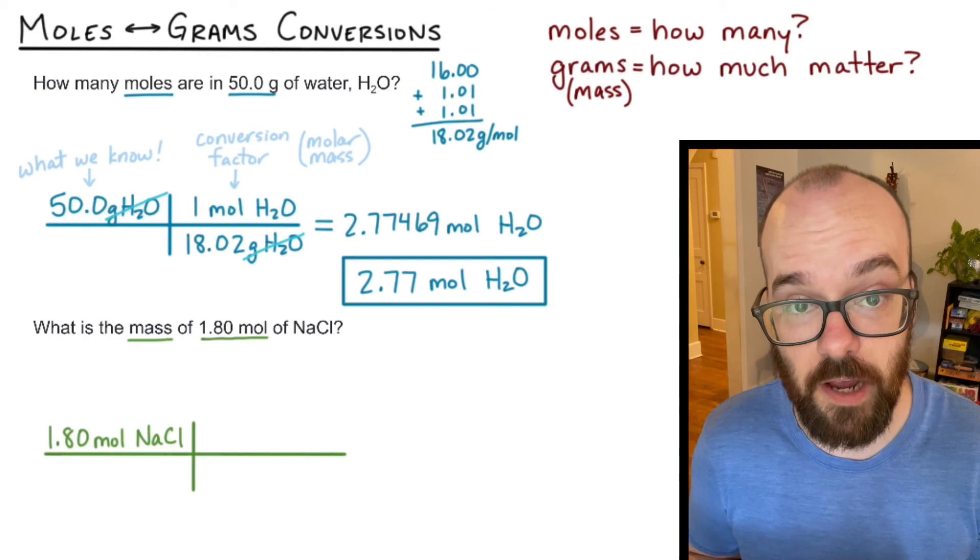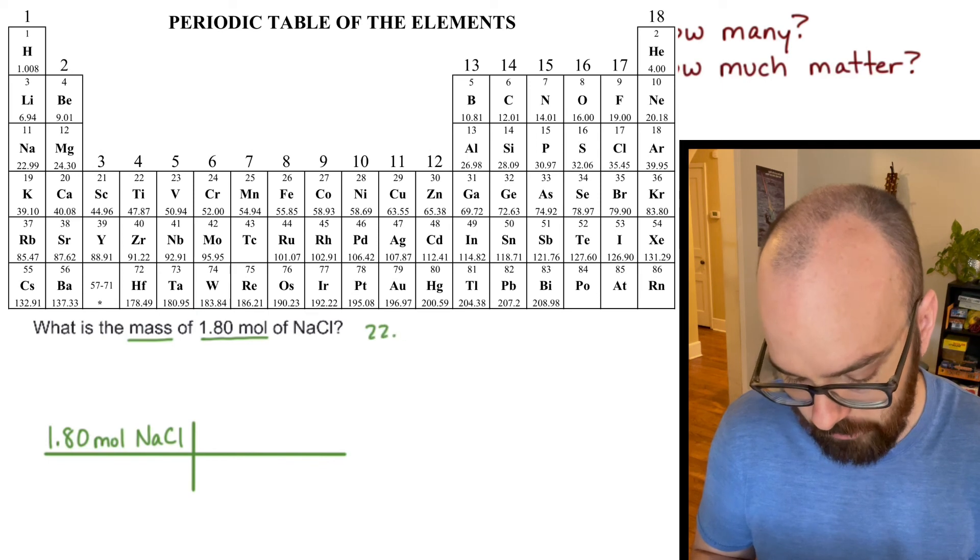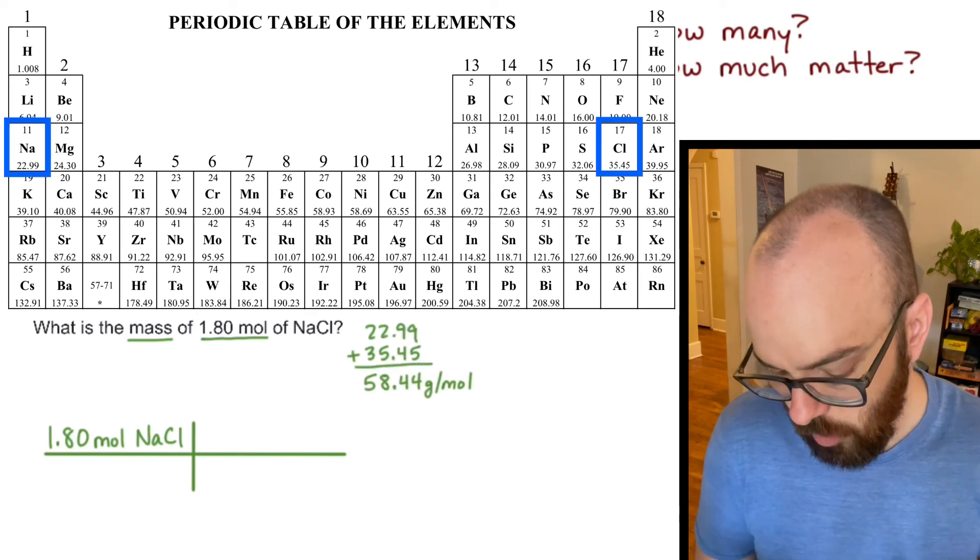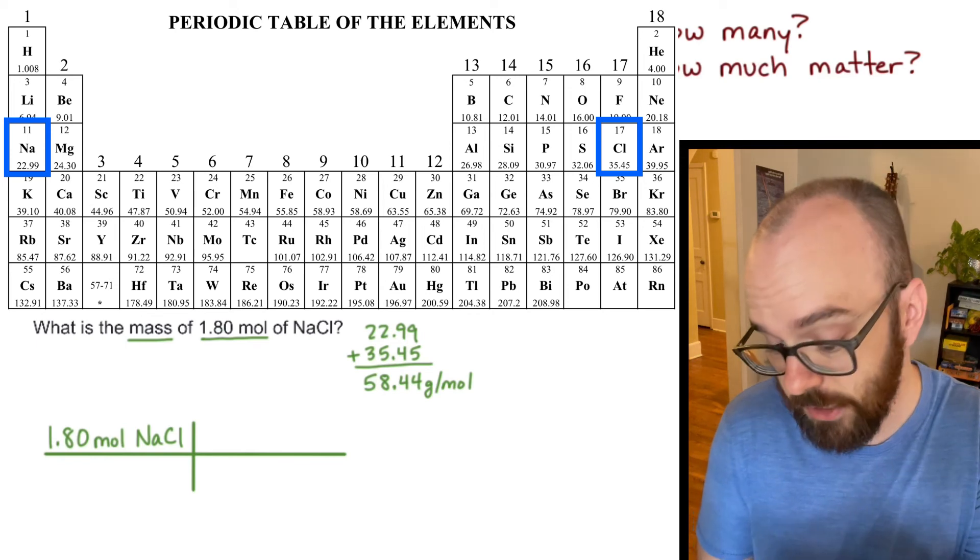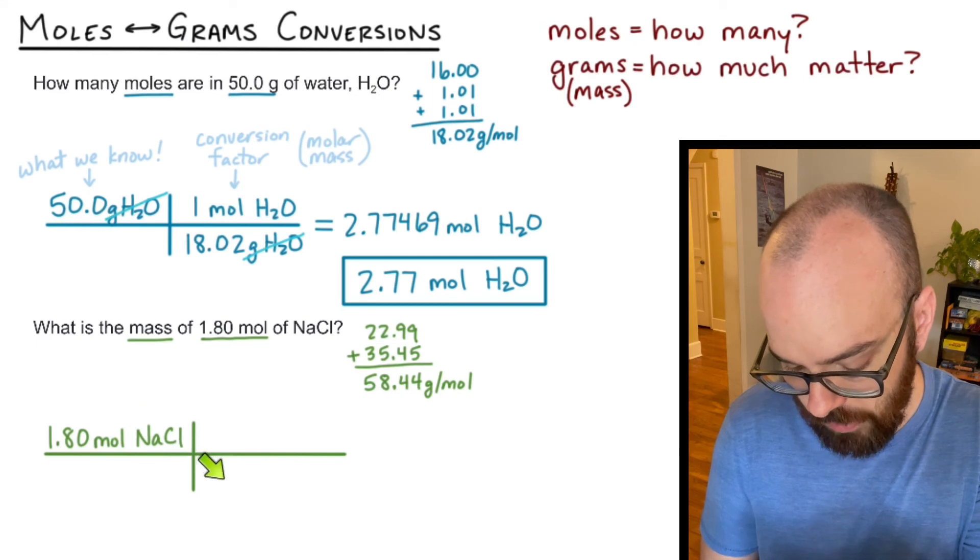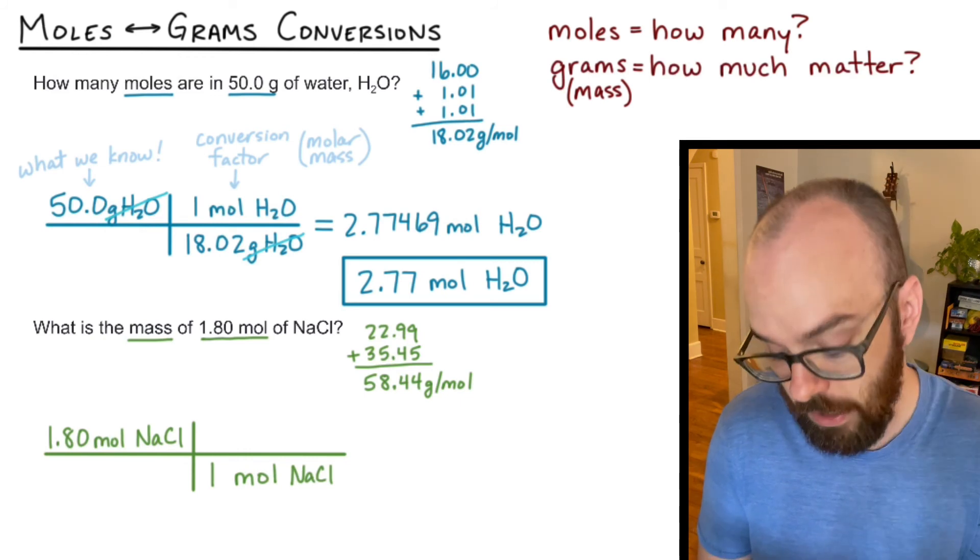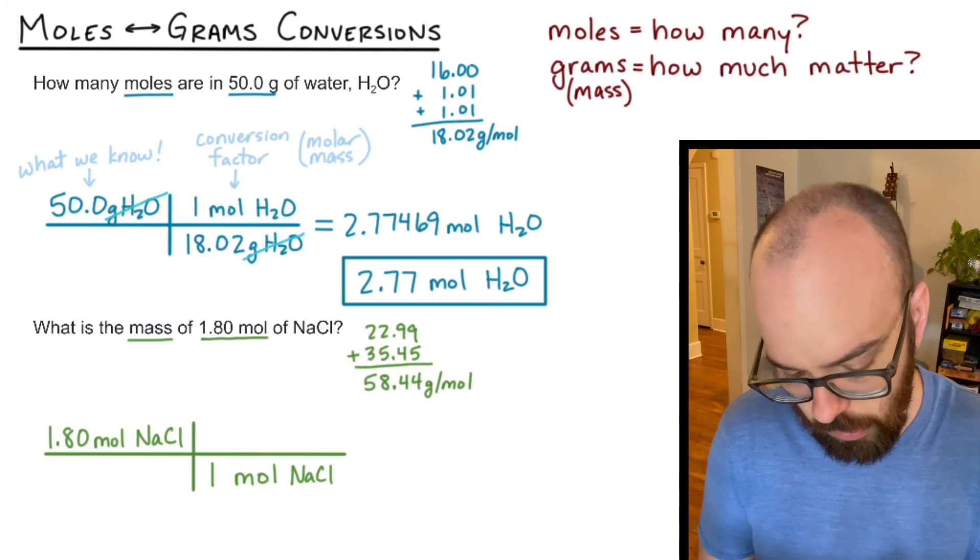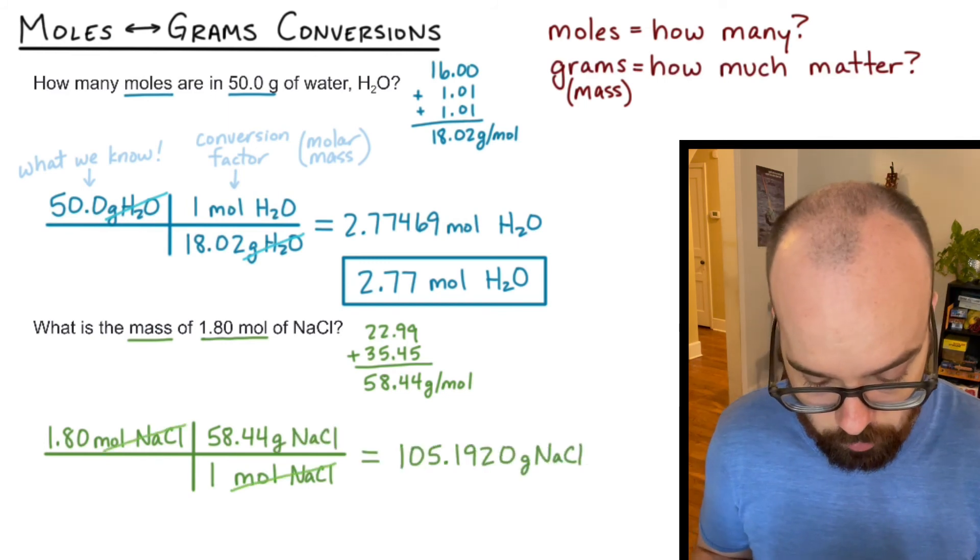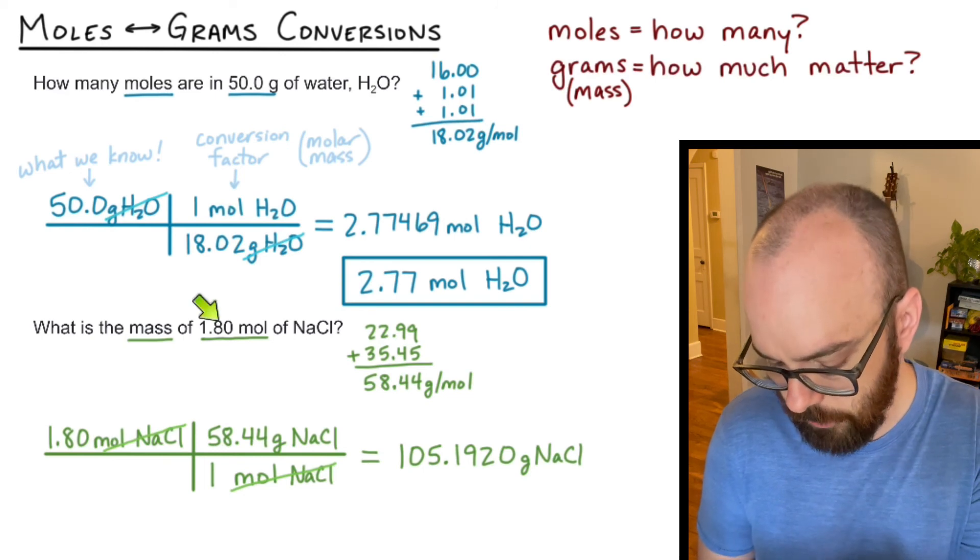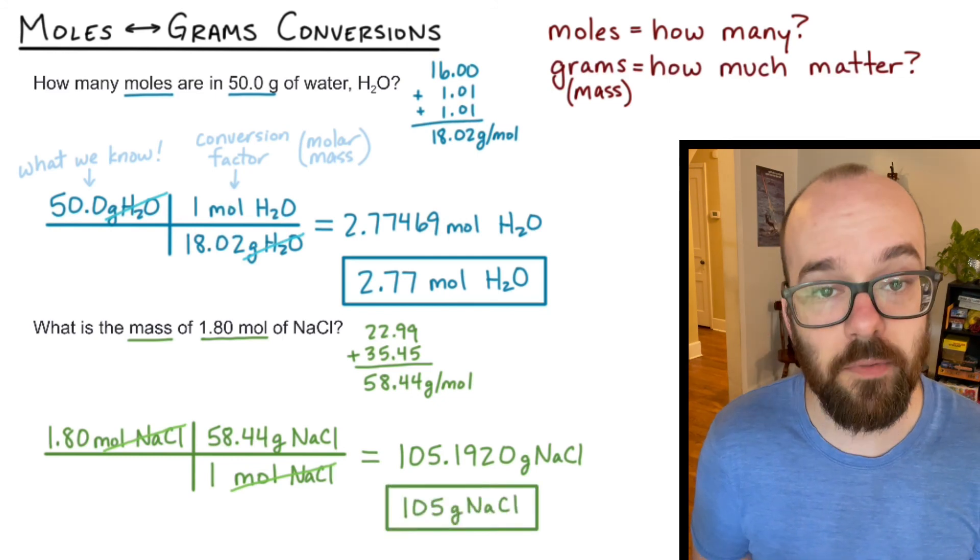And then I'm going to use my conversion factor. And again, I need the molar mass because I'm converting between moles and mass. So I'm going to look up the molar mass of sodium and chloride and add those together. When I add those two together, I get 58.44 grams per mole. And in this case, because I have moles on the left here, I'm going to need moles on the bottom. So I'm going to write one mole on the bottom so that moles of sodium chloride and moles of sodium chloride will divide out. And the 58.44 is going to go in the numerator, atop my conversion factor fraction. The moles will cancel out and I get 105.1920 grams of sodium chloride. Fewest number of sig figs I have in the problem is three, one, two, three. So I get to report out 105 grams of sodium chloride.